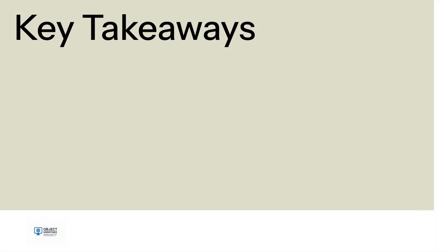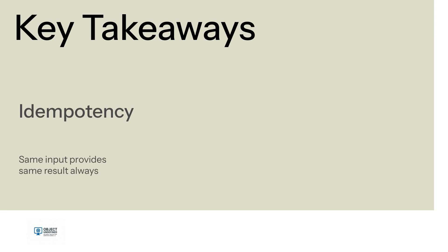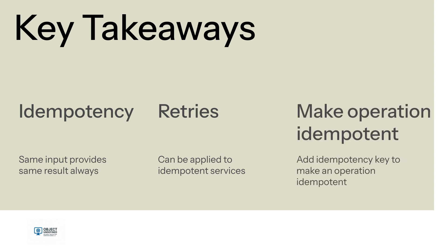So what are the key takeaways? An idempotent operation is one that does not change the outcome given the same input. While retries are crucial for system resilience, they can be disastrous when applied to non-idempotent services. To convert a non-idempotent operation to an idempotent one, add an idempotency key and track it using a dedicated repository.